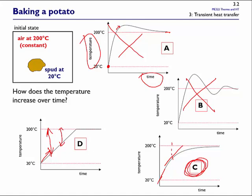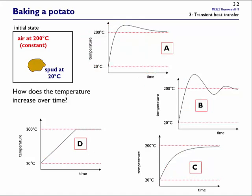What kind of mathematical function is that curve C? It's an exponential. What we're going to do now is prove that it's an exponential — subject to a few approximations and restrictions. And of course, this isn't just about cooking. There are lots of applications: any industrial process involving heating such as heat treatments for materials or welding, heat transfer and cooling in reciprocating engines, cooling of spacecraft, and heating and cooling of buildings over the daily cycle. They all follow this kind of behaviour.